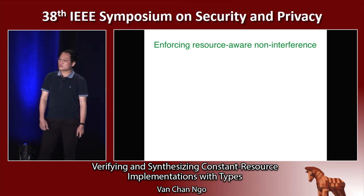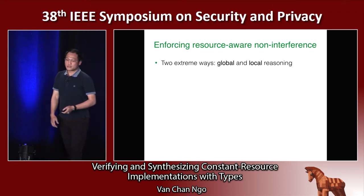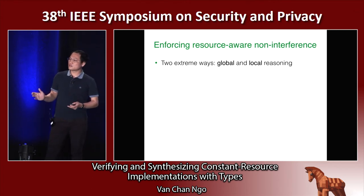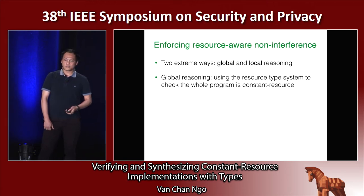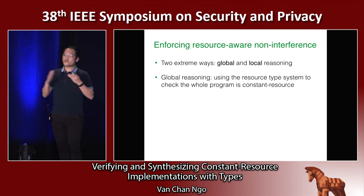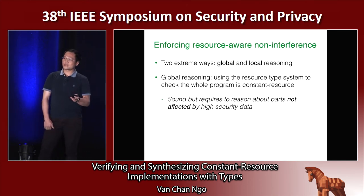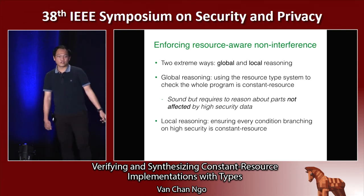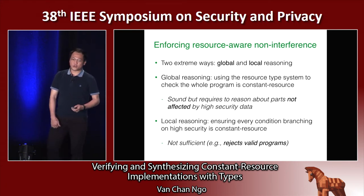How do we enforce the resource-aware non-interference property with the type system? Given that a program or expression satisfies the classic non-interference property, there are two ways to enforce resource-aware non-interference: global reasoning and local reasoning. The first method is global reasoning, where we use the resource type system to check the whole program for constant resource consumption. This method is sound, but it requires reasoning about parts of the program that are not affected by high security data. The second method is local reasoning, where we ensure that every conditional expression branching on high security data has constant resource consumption. This method is not sufficient because it can reject valid programs and accept invalid programs.